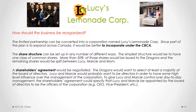After setting up the corporation and share structure, we would need a shareholders agreement, negotiated between Lucy, Marcy, Mom, and the dragons. The dragons would want to select at least a majority of the board of directors, since they want control over high-level management. Lucy and Marcy would probably want to be directors to have some high-level influence. To give Lucy and Marcy control over day-to-day management, the shareholders agreement could specify that they be appointed as officers — for example, Lucy as CEO and Marcy as Vice President or Chief Operating Officer.